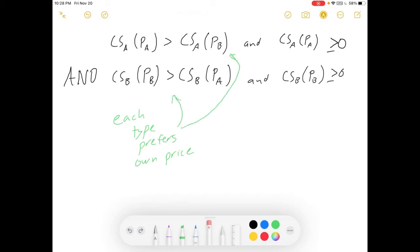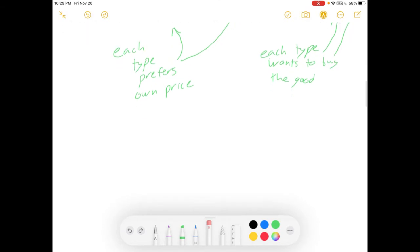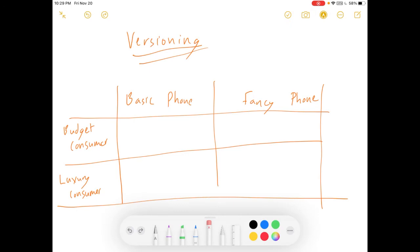So, we want it so that each type prefers their own price, and we also want it so that each type wants to buy the good instead of not buying anything. Those are the conditions for incentive compatibility. Now, let's get to versioning.